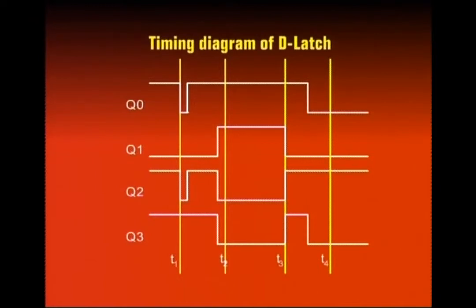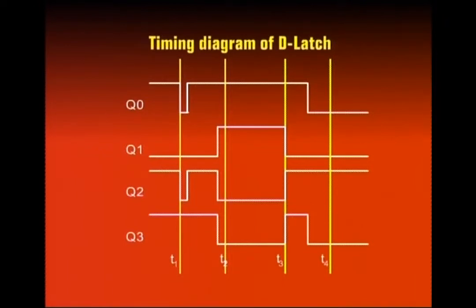In interval T3, the clock signal is high again, enabling the D latch — so output reflects input changes. In intervals T3 and T4, Q0, Q1, Q2 follow any input changes. Between T4 and T5, the clock is low, so data is stored again. The D flip-flop is better for this application because it stores data at a very precise interval — only at the clock edge.